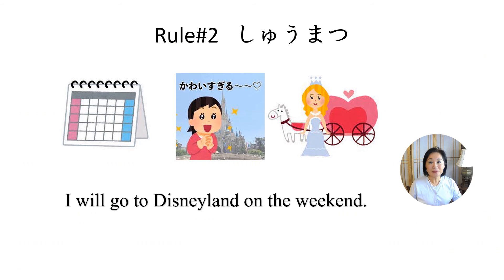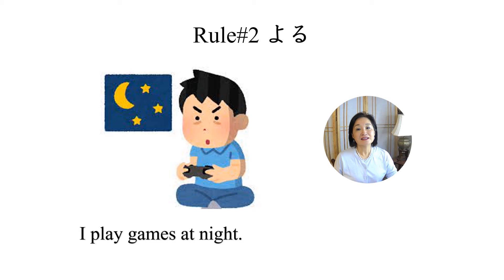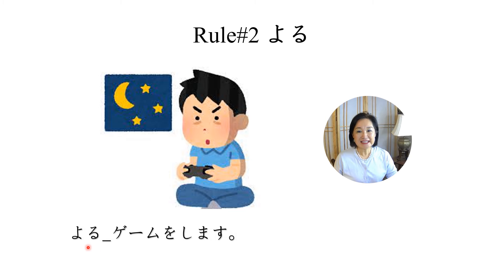Knowing that rule, let's translate this sentence into Japanese: 'I will go to Disneyland on the weekend.' 週末ディズニーランドに行きます, and with emphasis: 週末にディズニーランドに行きます. If you want to specify the weekend — for example, going on the weekend but not a weekday — then you may add に. How about this sentence: 'I play games at night'? The word for night is 夜, so: 夜ゲームをします. The に is optional here.